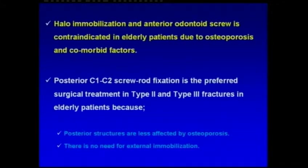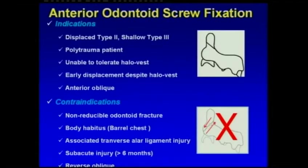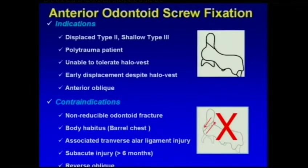C1-C2 screw-rod fixation is the preferred surgical treatment in type 2 and 3 fractures in elderly patients because posterior structures are less affected by osteoporosis. There is no need for external immobilization after C1-C2 screw-rod fixation. Anterior odontoid screw fixation is a good solution in displaced type 2 and shallow type 3 fractures, polytrauma patients, early displacement despite halo vest, and anterior oblique fractures. It should not be used in poor body habitus, short neck injury, and reverse oblique fractures.